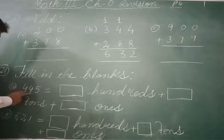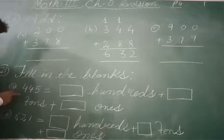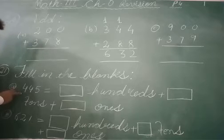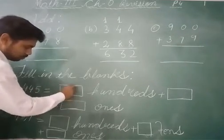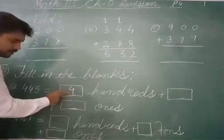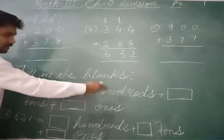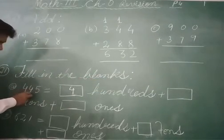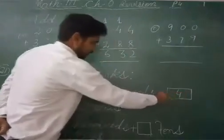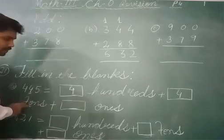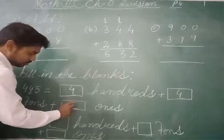This is the ones place, this is the tens place, and this is the hundreds place. Starting from the hundreds place — how many hundreds are here? Yes, very good. There are four hundreds here. We will write four — not four hundred, just four, because 'hundred' is already written. Four hundreds. And how many tens? Four tens. And we will write five ones.